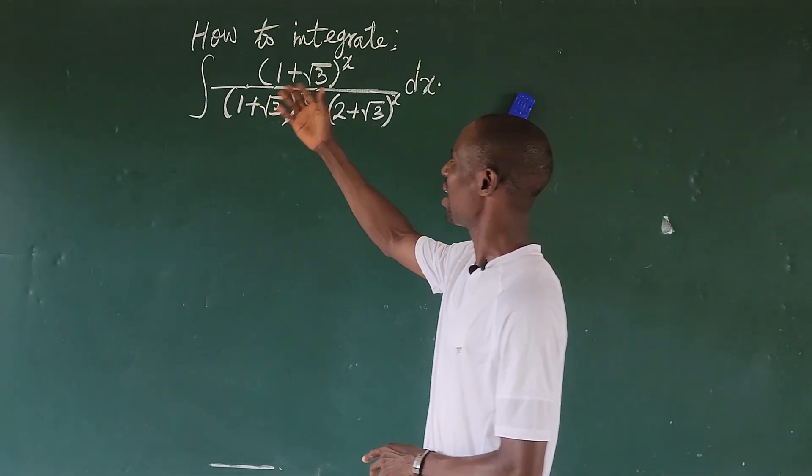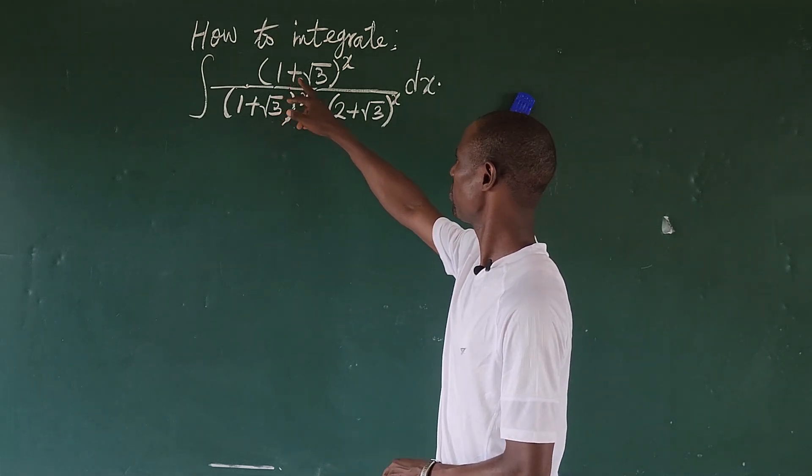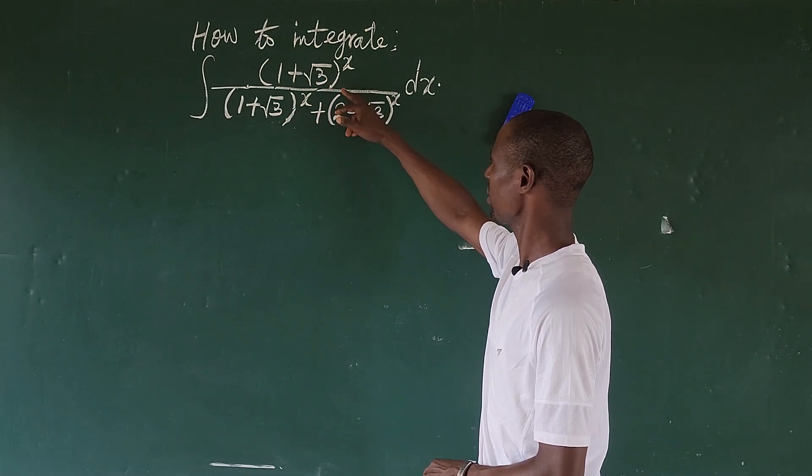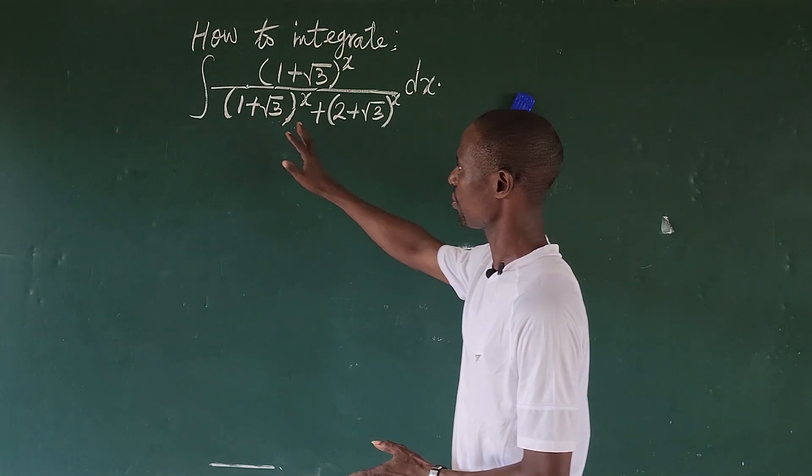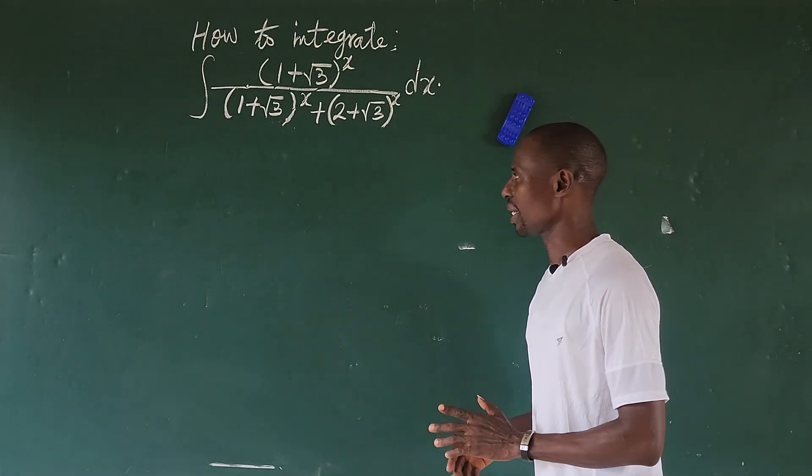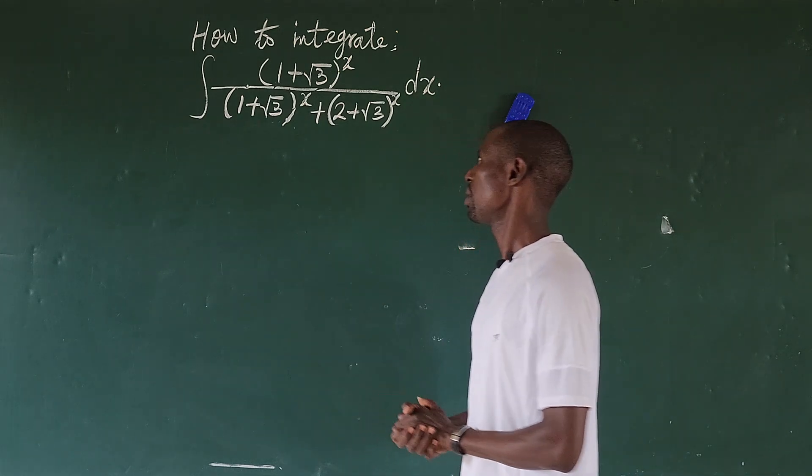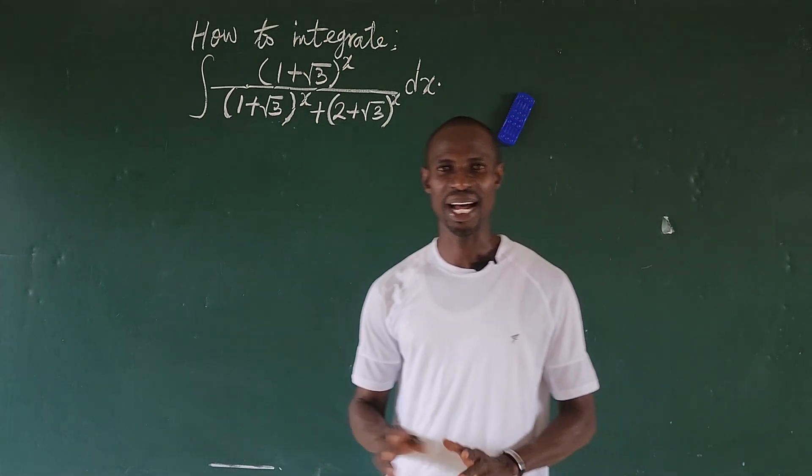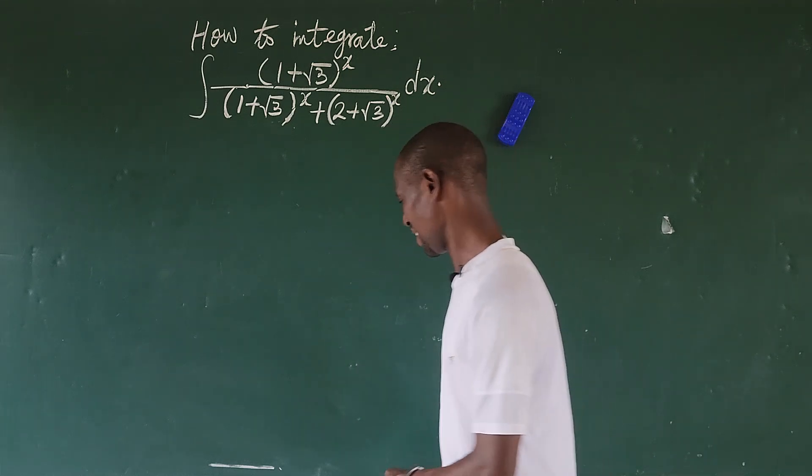The question is how to integrate the integral of (1 + √3)^x all over (1 + √3)^x + (2 + √3)^x dx. So how do we integrate this? Without much waste of time, let's go into the solution.